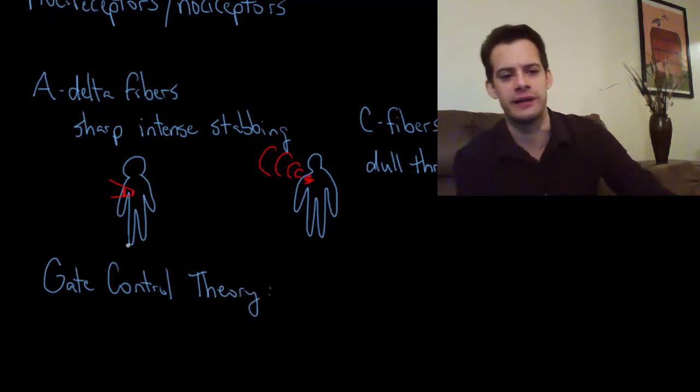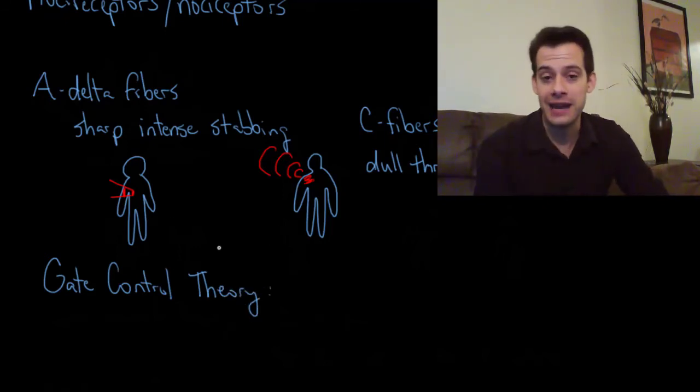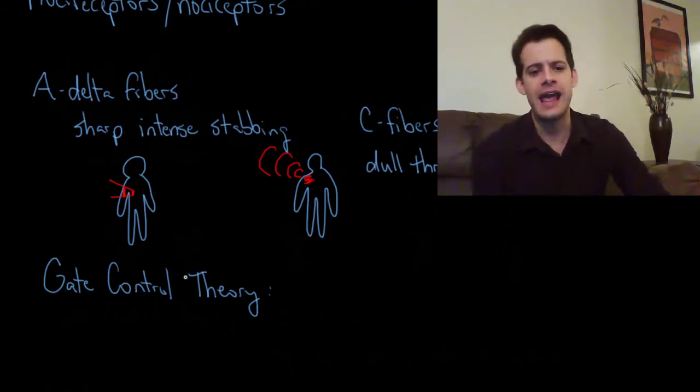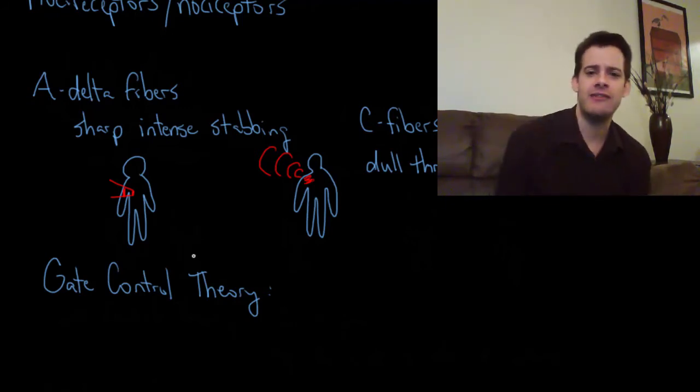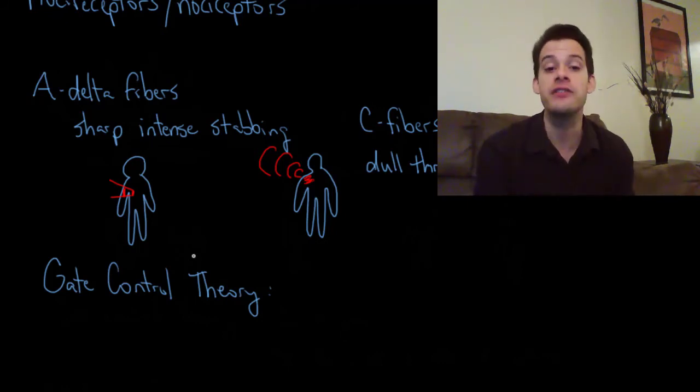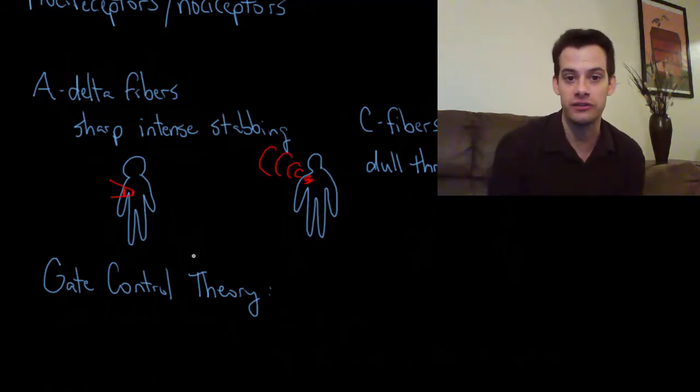The idea of gate control theory is that our pain messages need to get up to our brain through the spinal cord. They're sort of competing with other messages that also need to travel along some neurons and get to the spinal cord and get up to the brain. It's kind of like a limited amount of bandwidth. So the idea is that if we stimulate lots of other receptors, non-pain receptors, around the area that's in pain, we can actually reduce the pain message. We can inhibit the signal from those nociceptors.